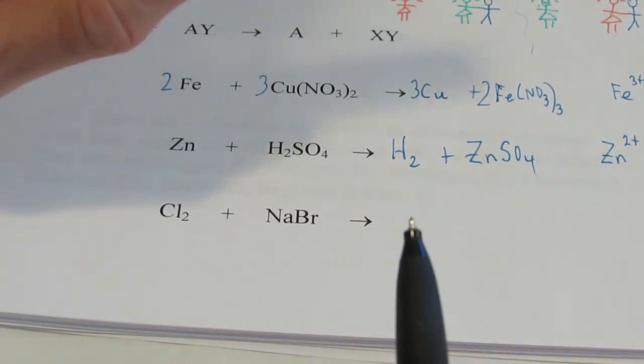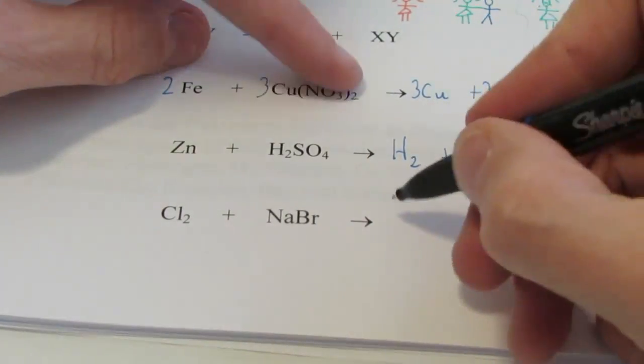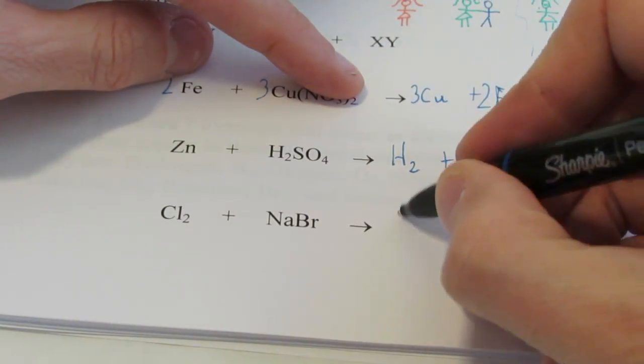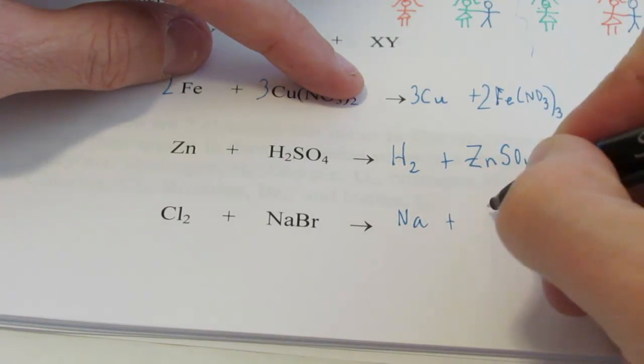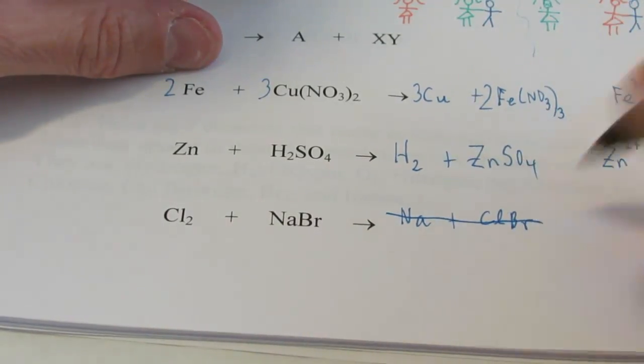All right. I will bet this is what you did. You said, okay, Cl and sodium switch positions. So you probably put sodium by itself, and you tried to hook Cl and Br together somehow. That doesn't happen.